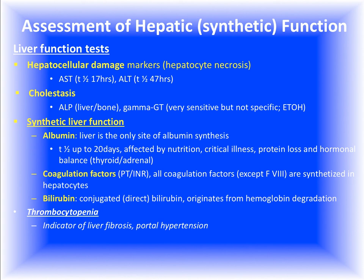The hepatocytes produce about 500 cc of bile fluid per day, much of which is reabsorbed since it is important for fat absorption. The direct water-soluble bilirubin can be measured and gives an assessment of how well the excretion function of the liver is performing. Also, don't forget the platelet count — a significantly reduced platelet number can be part of portal hypertension and therefore an indication of liver fibrosis or cirrhosis.